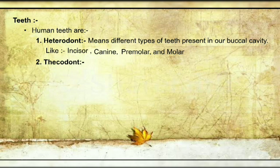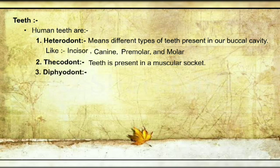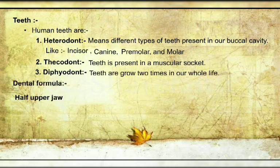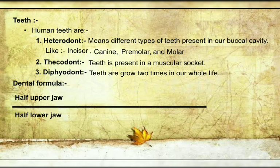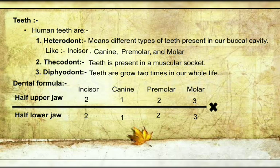Next is thecodont — 'theco' means socket, 'dont' means teeth — teeth are present in a muscular socket. Next is diphyodont — 'di' means two, 'phyo' means life, 'dont' means teeth — in our whole life the teeth grow two times: first is milky teeth and next is permanent teeth. See the dental formula: half upper jaw and half lower jaw — incisors 2 and 2, canine 1 and 1, premolar 2 and 2, molar 3 and 3. This multiplication sign accounts for both the upper half and lower half jaw, multiplied by 2, giving a total of 32 teeth.